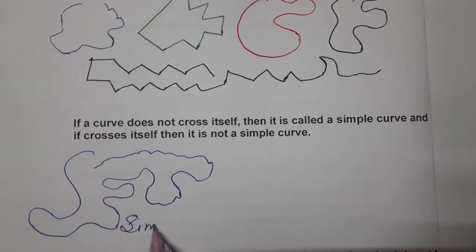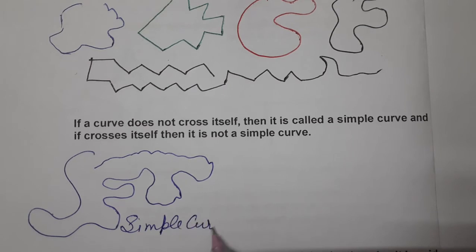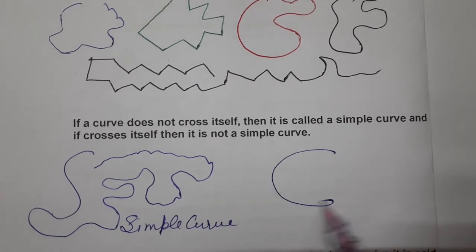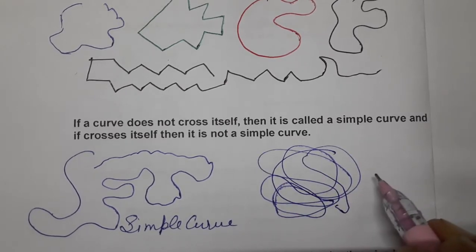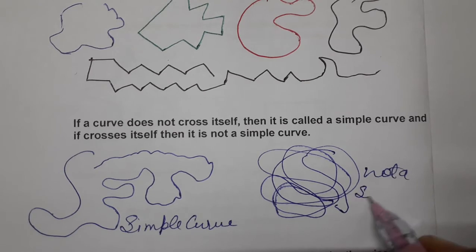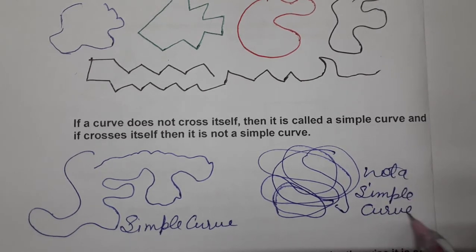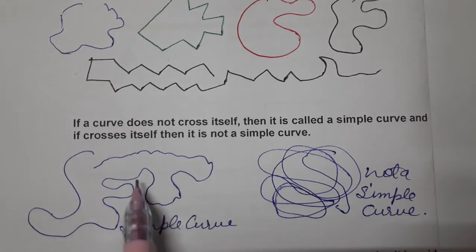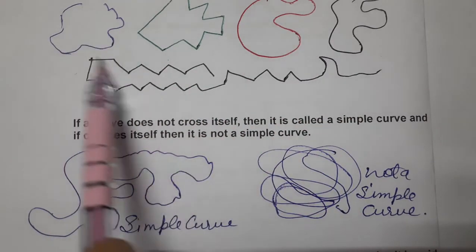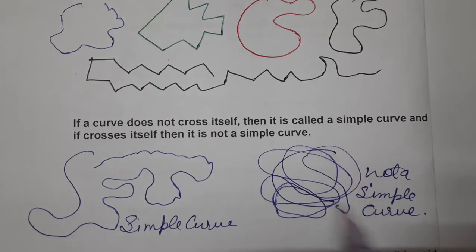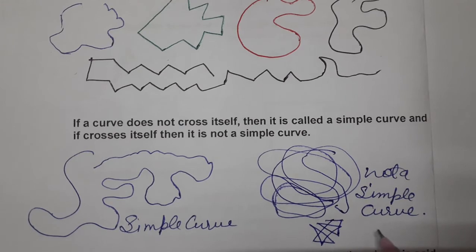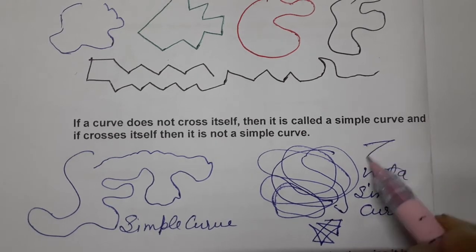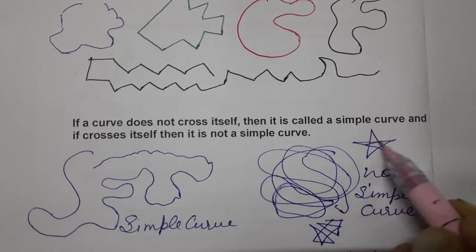I am making one curve and it is not crossing itself, so it is a simple curve. But when it crosses itself like this, then it is not a simple curve. These are simple curves — not crossing itself. And this is not a simple curve. A star is also not a simple curve because it crosses itself.